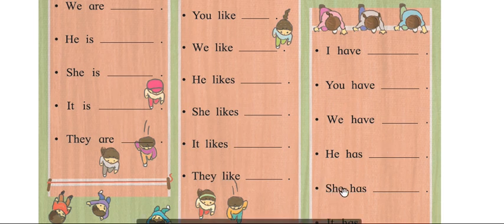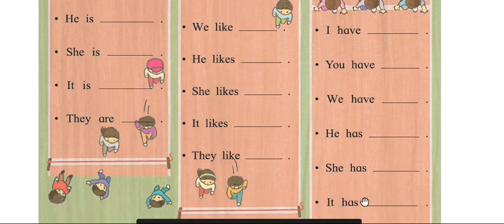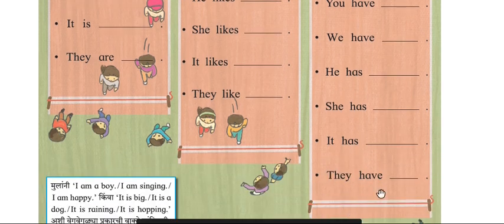He has a dog. She has a TV set or mobile set. It has four legs. They have so many beautiful toys.